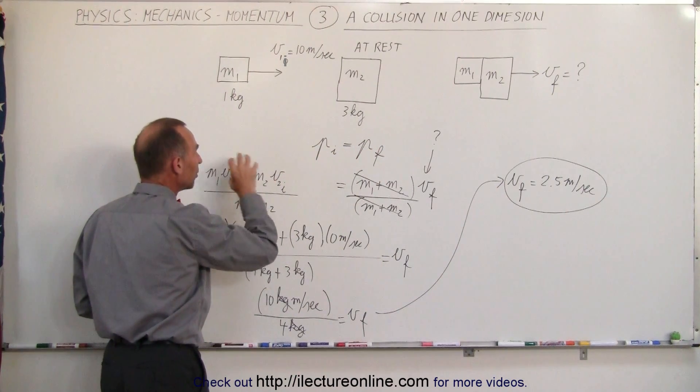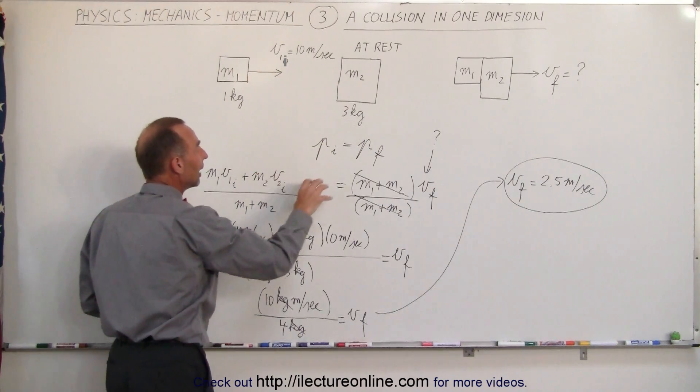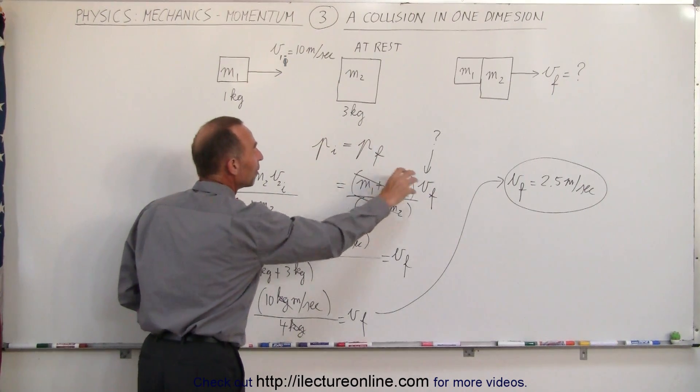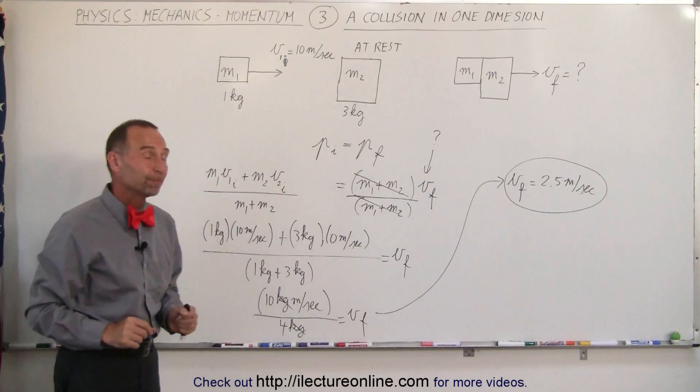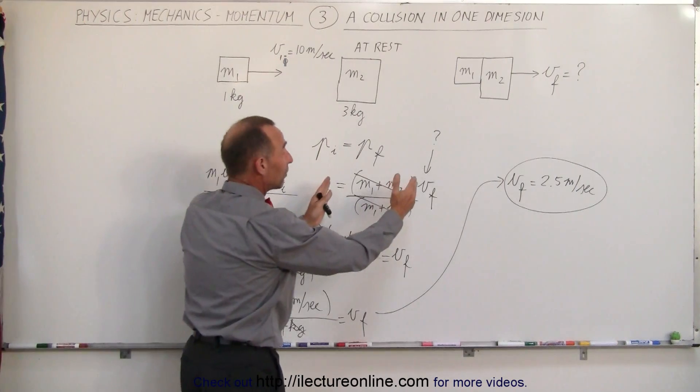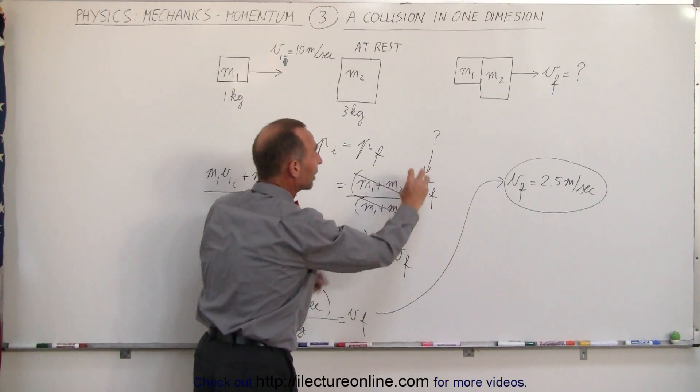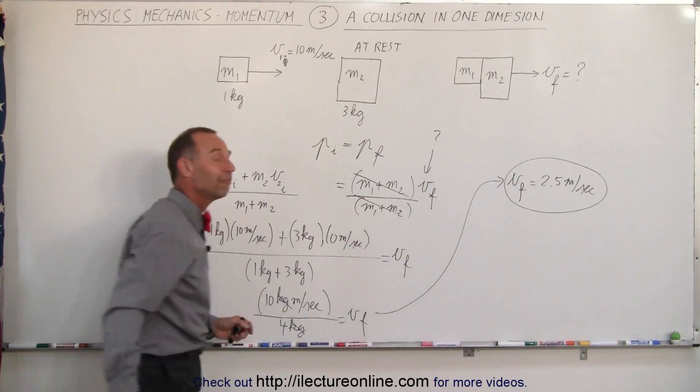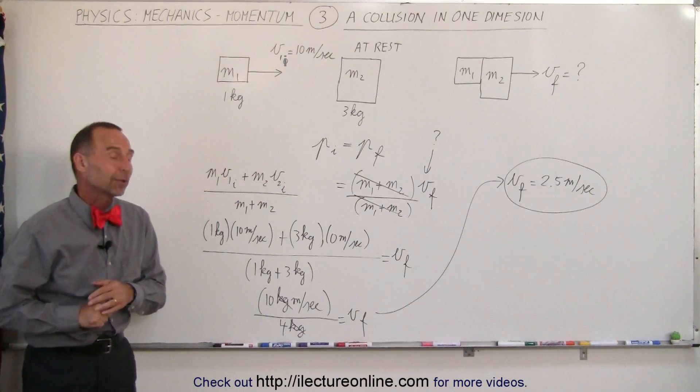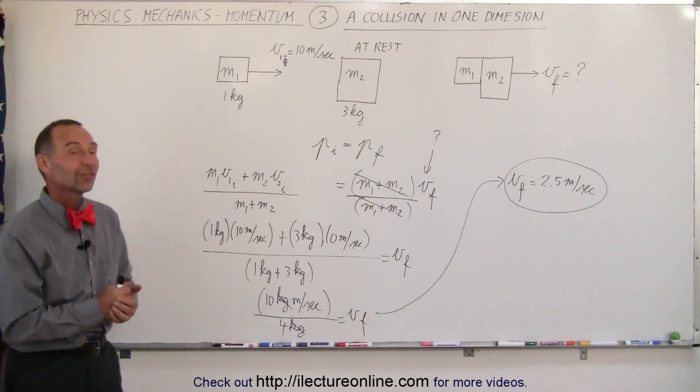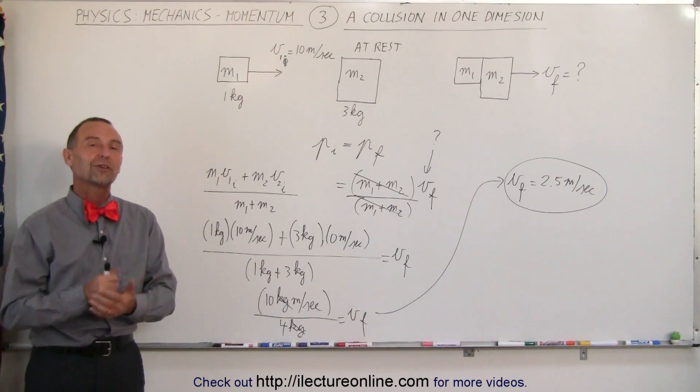And then we add up the momentum of each object before the collision, and set it equal to the momentum of each object after the collision. If the two objects stick together after the collision, you add their masses together, and you just have a single final velocity, which makes the problem a little bit easier. And that's what we mean by conservation of momentum.